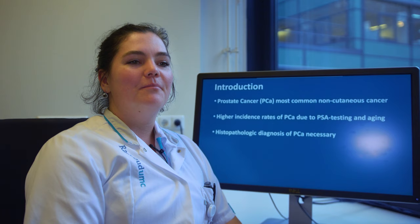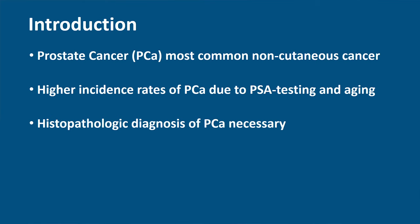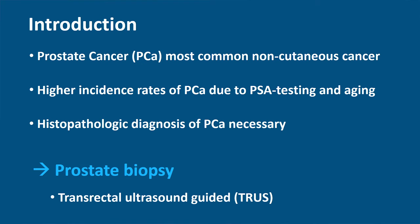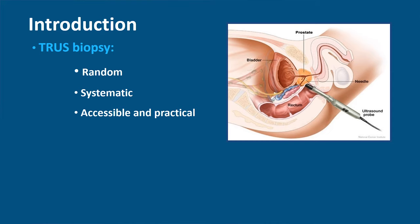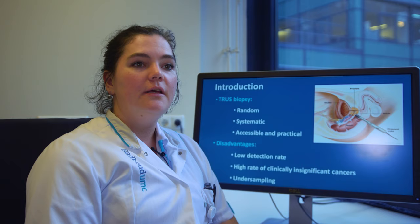Biopsy is the only technique capable of providing definitive histopathologic diagnosis of prostate cancer. For this reason, every year thousands of patients undergo a prostate biopsy. In general, when there is an increased risk of prostate cancer, a prostate biopsy is performed using transrectal ultrasound, TRUS. During a TRUS biopsy, 10 to 12 random tissue samples are obtained in a systematic grid-like pattern. However, systematic biopsies are hampered by sampling errors, tumor multifocality, and heterogeneity of the lesion, or a combination of these factors.